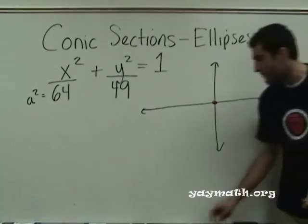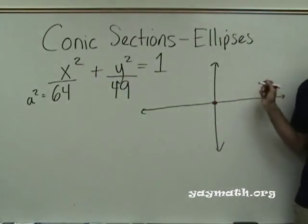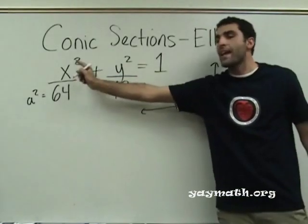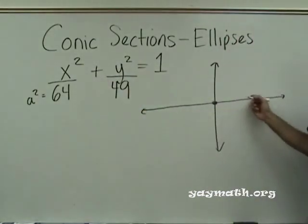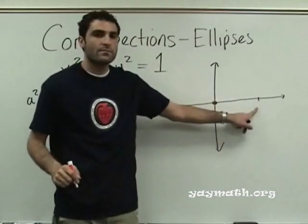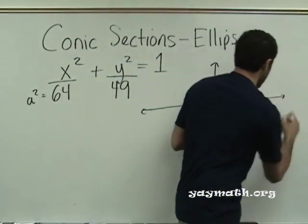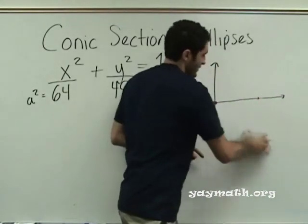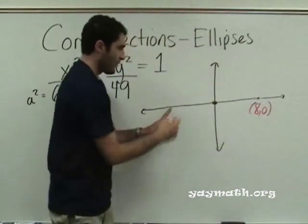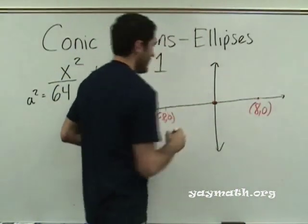And a is the value that we move left and right from the vertex. Because it's x. So since a squared is under x, we're going to move eight over here. What's this point? Eight. Eight. Zero. Zero. Good. Eight. Zero. Clean it up. Make it better. Eight. Zero. What's this point over here? Negative eight to zero. Negative eight to zero. Okay.